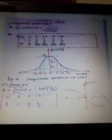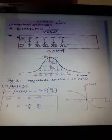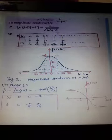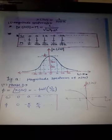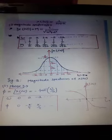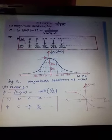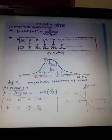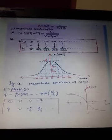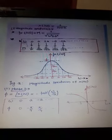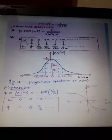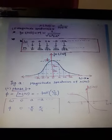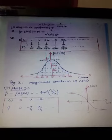The Fourier transform X(jω) is a complex-valued function. To plot X(jω) as a function of frequency ω, we express it in terms of its magnitude and phase spectrum. For a complex number Z = a + jb, the magnitude is √(a² + b²) and the phase is tan⁻¹(b/a). Therefore, the magnitude of X(jω) = 1/√(ω² + a²), and the phase = −tan⁻¹(ω/a).